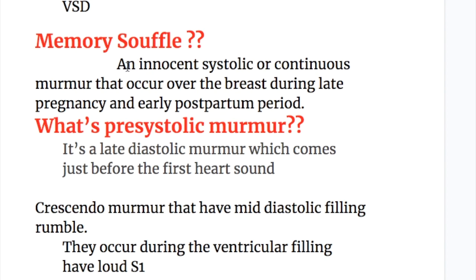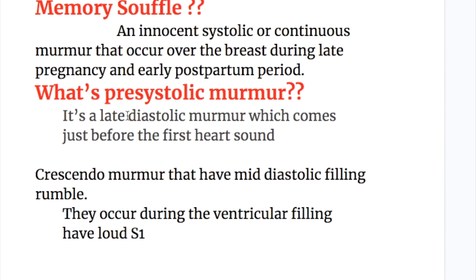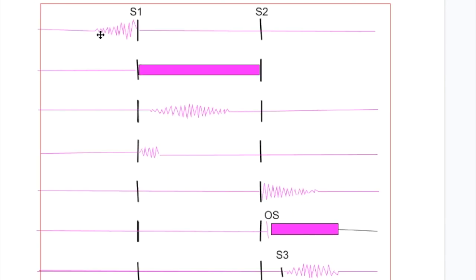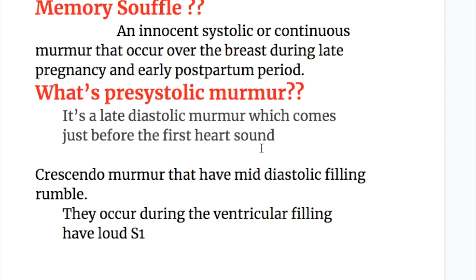A mammary shuffle is an innocent systolic or continuous murmur that occurs over the breast area during late pregnancy and early postpartum period. A presystolic murmur is actually a late diastolic murmur — it is not a systolic murmur. It is a diastolic murmur and causes a loud first heart sound.